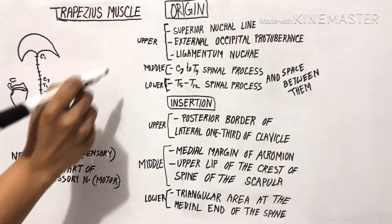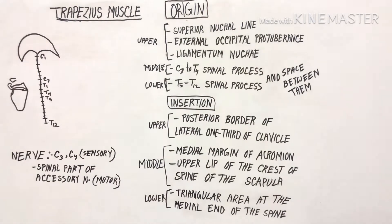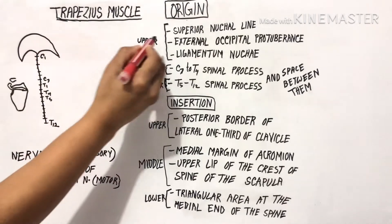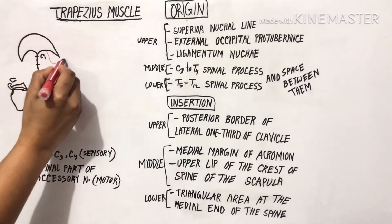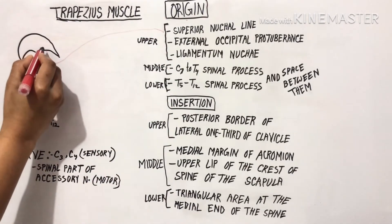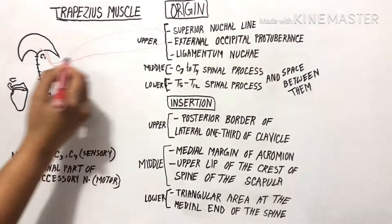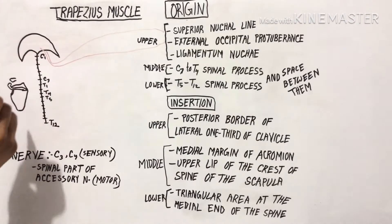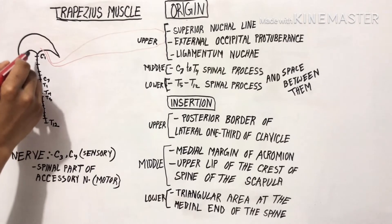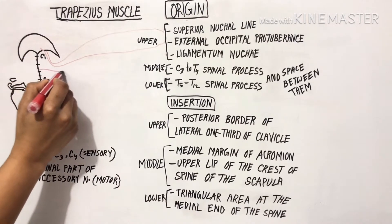First we will see the upper part — its origin, insertion, and function. The upper part originates from the superior nuchal line, the external occipital protuberance, and the ligamentum nuchae from C1 to C7.